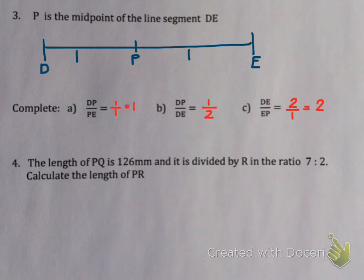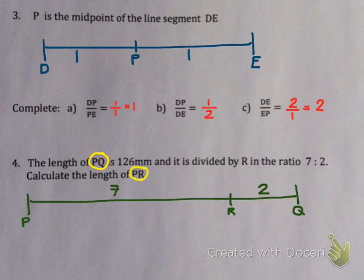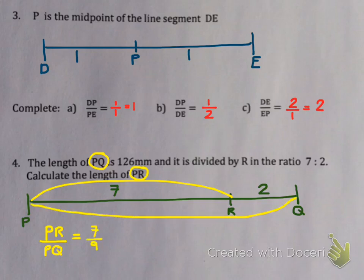Number 4 says the length of PQ is 126mm and it is divided by R in the ratio 7 to 2. So if I draw PQ and I randomly put in R, such that it's 7 parts to 2 parts, the question is calculate the length of PR. They've given me PQ. So I'm going to use a ratio of PR and PQ. I'm going to put PR on the top since that's what I want. Now PR is 7 parts and PQ is 9 parts. So that's what this ratio must simplify to.